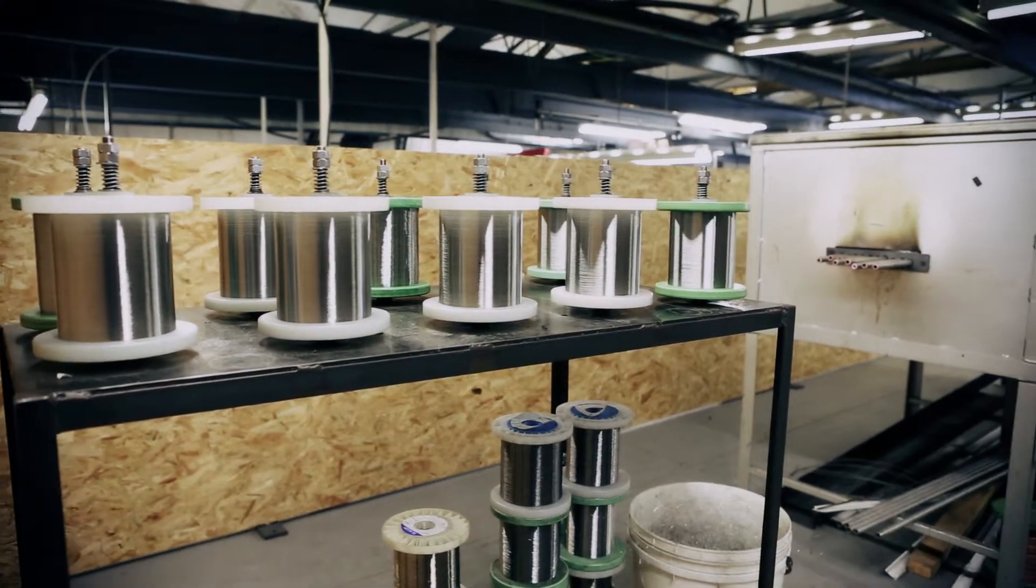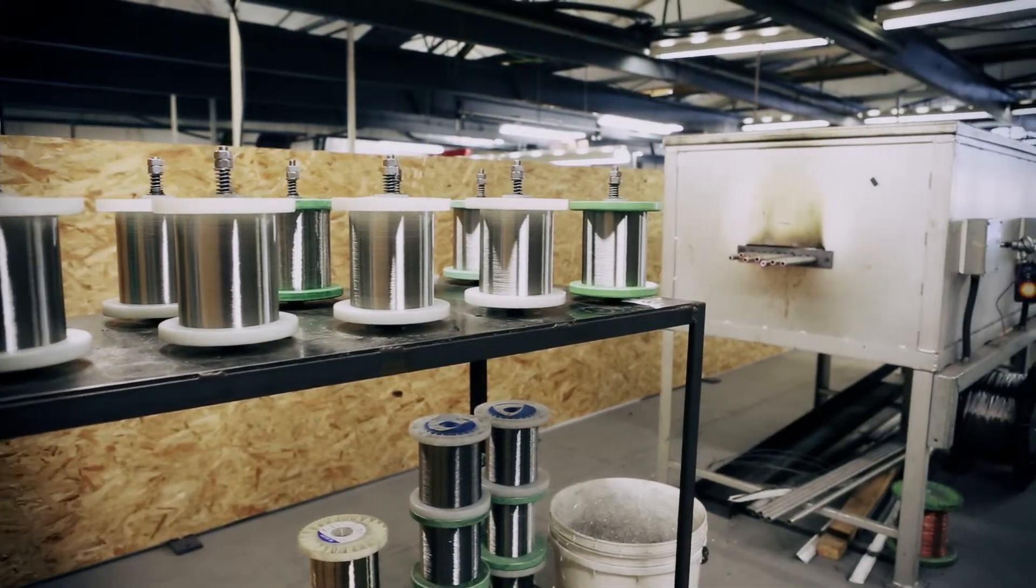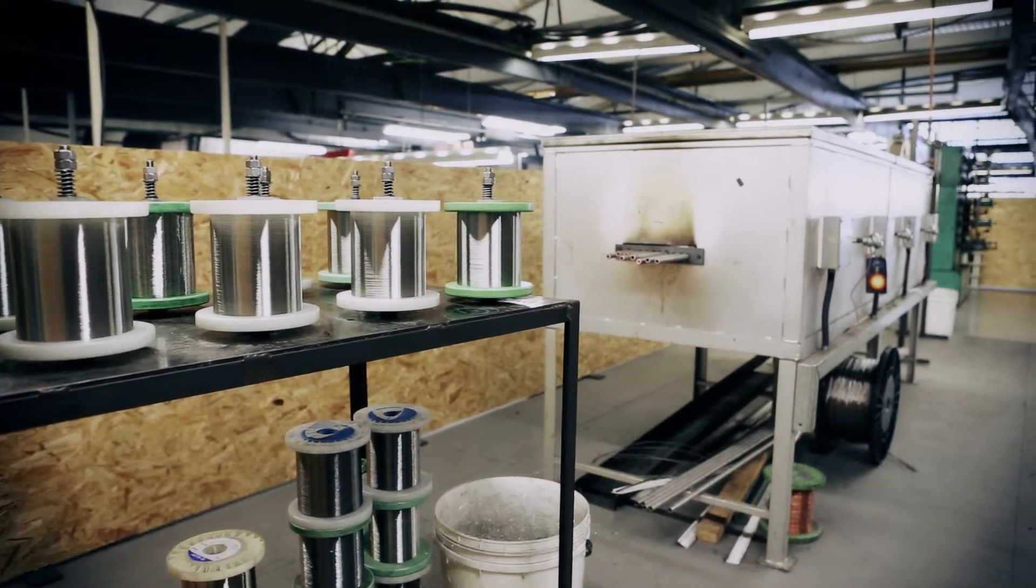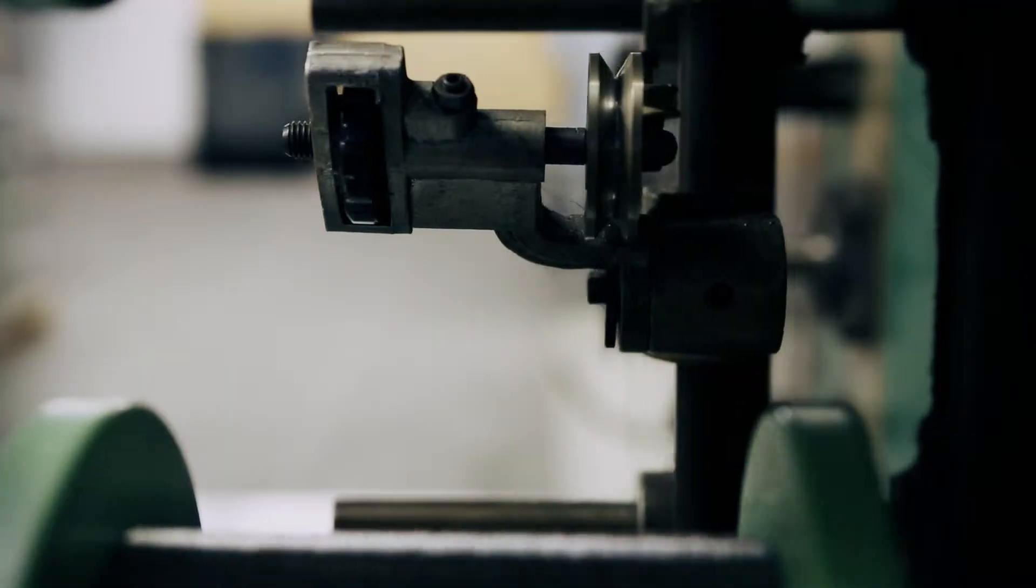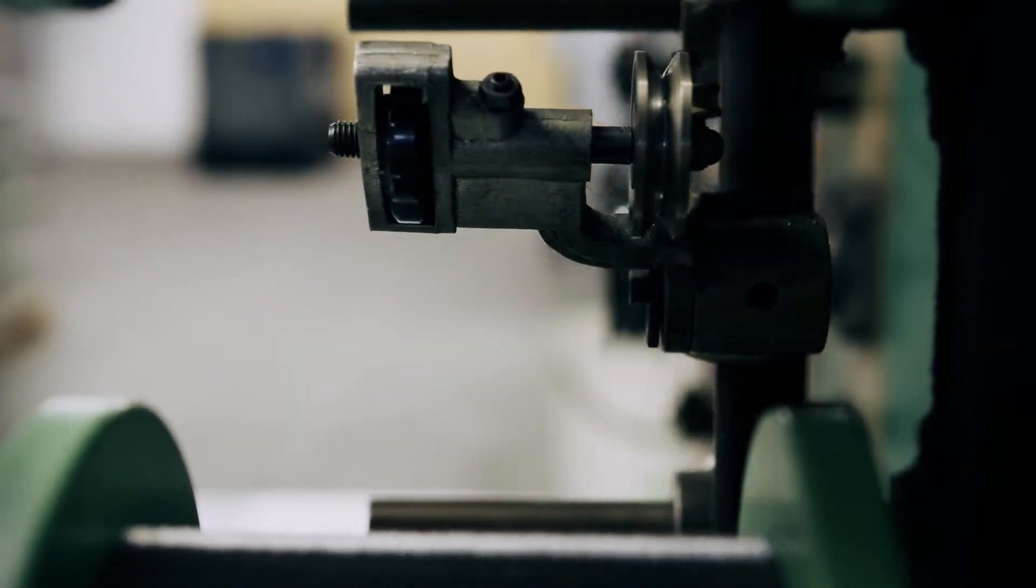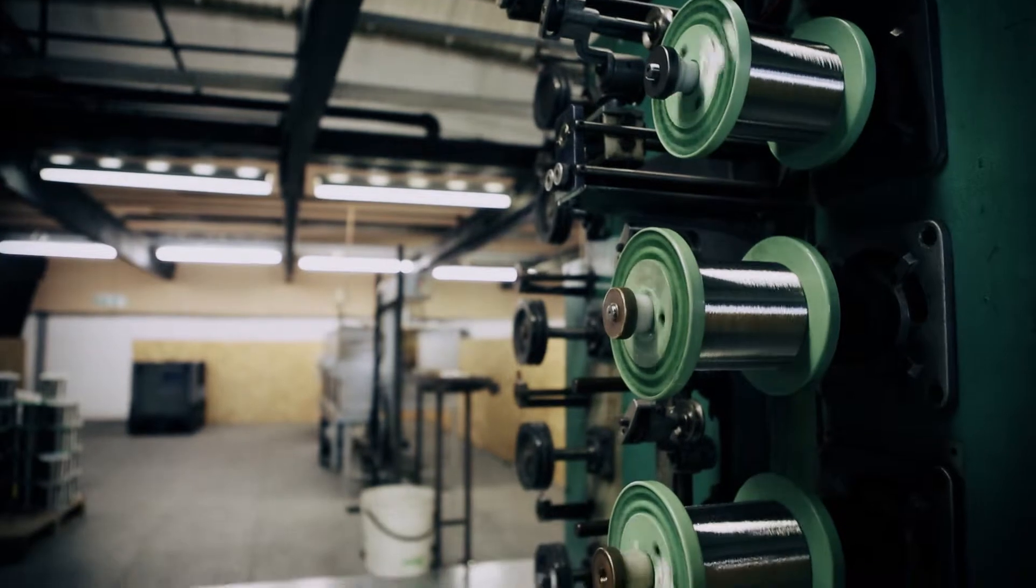The annealing process realigns the wire's internal structure, making the wire flexible and bringing the electrical properties back to usable tolerances. At SK wiring, the drawing and annealing process is carefully balanced to ensure only the highest quality material is produced.